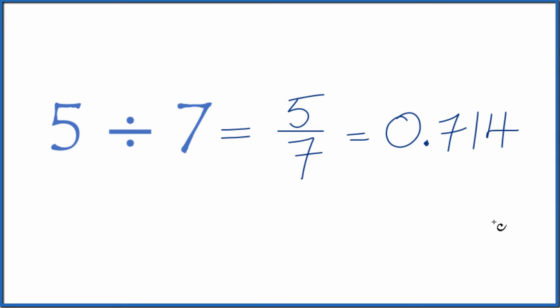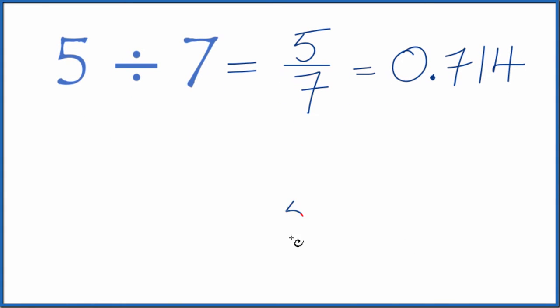You could also do this longhand. You could take 5 and see how many times 7 goes into 5. 7 doesn't go into 5, so why don't we call this 50, and then we can put 0 and a point up here.